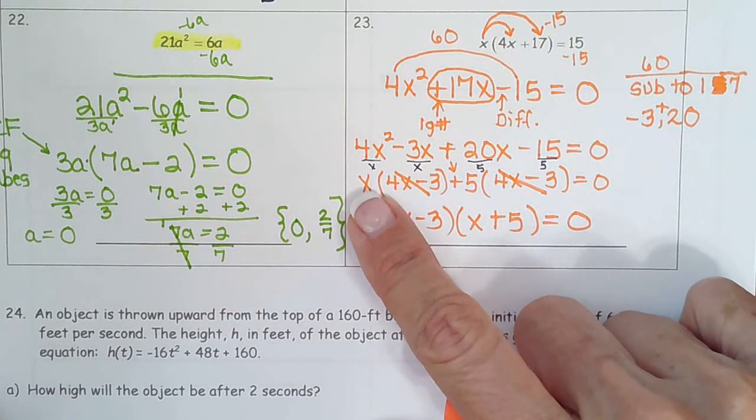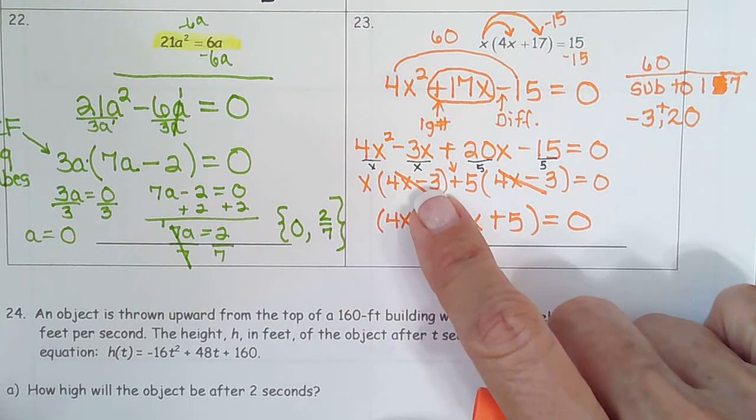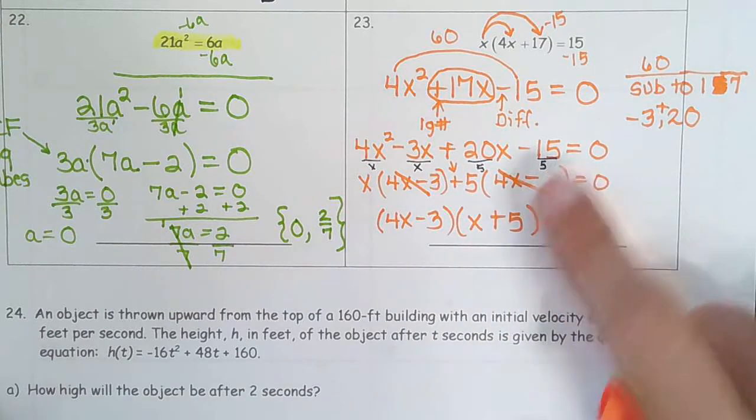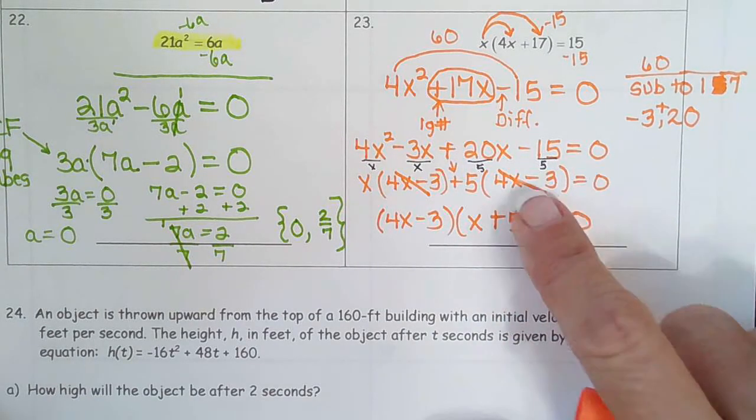Then we found a GCF of x, took it out and got 4x minus 3. And we brought down the plus, found a GCF of 5, divided each one by 5, got 4x minus 3.